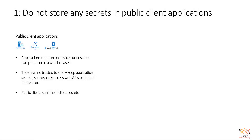In this video I prepared 10 recommendations, but of course there are more. So let's start with the first one: do not store any secrets in public client applications. If you watched my previous video from this series, you know that public client applications are applications that run on devices, desktop computers, or in a web browser. They are not trusted to safely keep application secrets, so they only access web APIs on behalf of the user. Public clients cannot hold client secrets, so public client applications should never contain any secrets.